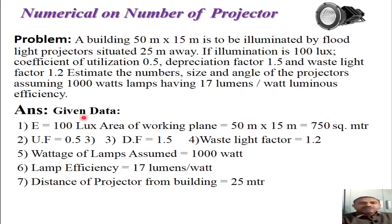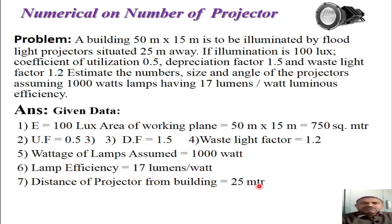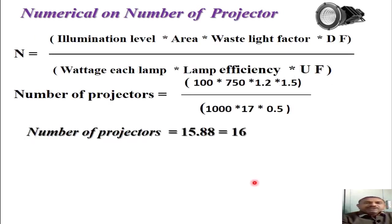The given data is: illumination level = 100 lux; area of working plane = 50 × 15 = 750 square meters; utilization factor = 0.5; depreciation factor = 1.5; waste light factor = 1.2; lamp wattage = 1000 watt each; lamp efficiency = 17 lumens per watt; distance of projector from the building = 25 meters. Using all this data, we can now apply the equation to calculate the number of projectors.